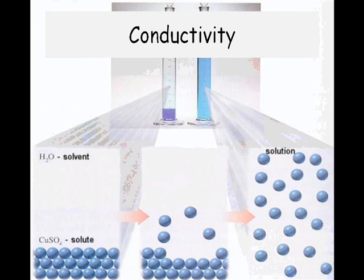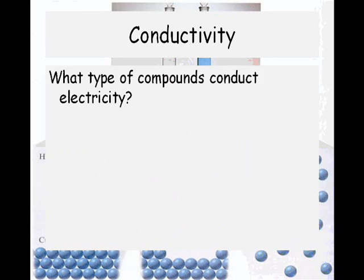Let's go ahead and talk about conductivity, solubility, and concentration. We'll dive right into conductivity. We need to determine and know what type of compounds conduct electricity. We've already talked about this in ionic versus covalent, so let's review.